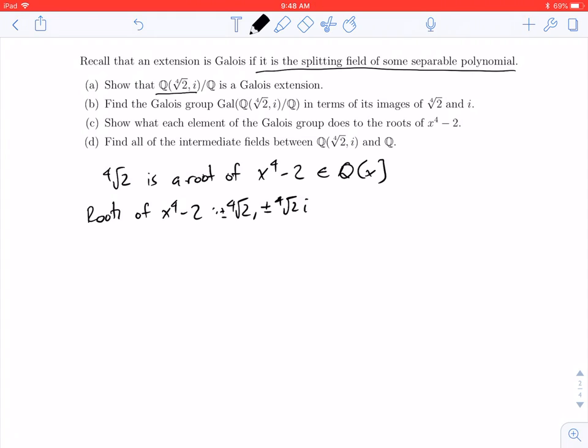And so that means that the splitting field of x to the fourth minus 2 would be Q adjoin all of these roots: plus minus fourth root of 2, plus minus fourth root of 2 times i. But this is of course the same thing as if I just adjoin the fourth root of 2. I don't need the negative, that's already going to be for free. And also i.